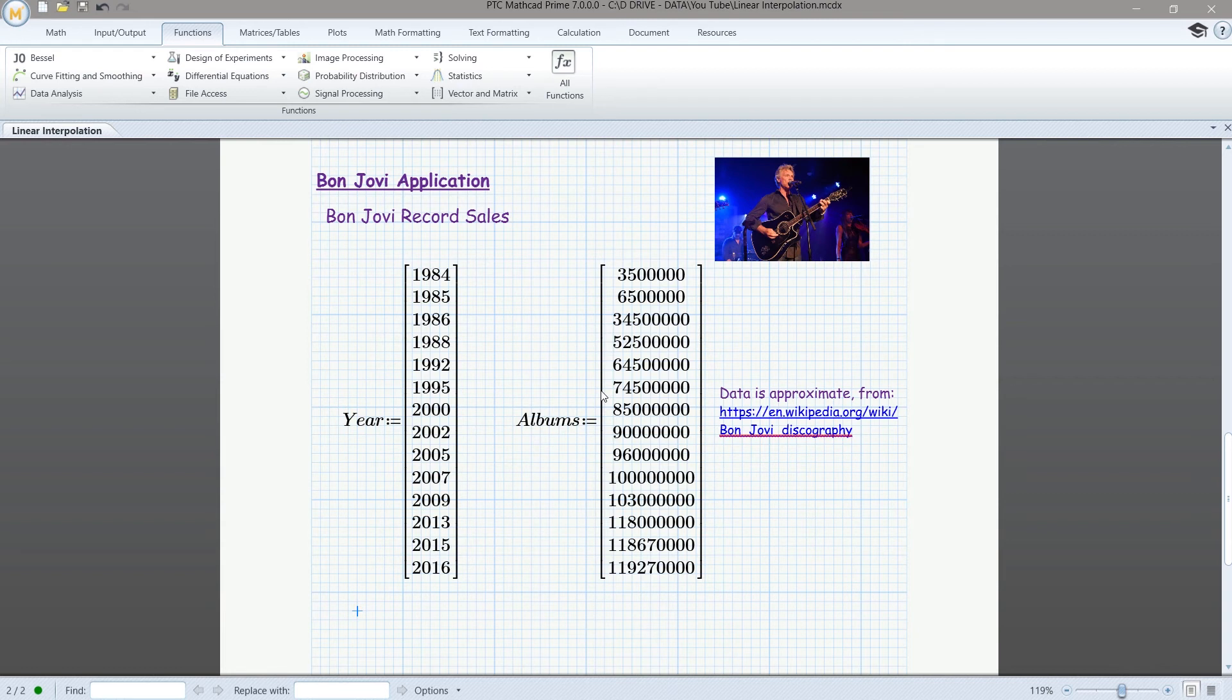So we have the years in this X data vector, and then we have the albums sold in any given year. Well, not in any given year. This is a running sum. So in 1984, we have 3.5 million albums sold. In 1985, we're up to 6.5 million albums sold. And by the time we get down to 2016, we're at 119 million. So our interpolation function is going to interpolate the number of albums sold at any given point in time between 1984 and 2016.